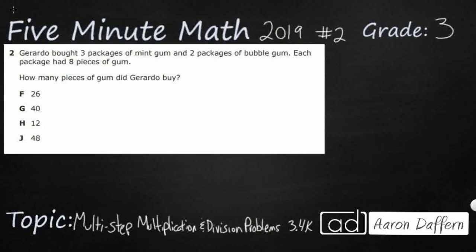Hello, and welcome to 5-Minute Math. Today we are looking at the third grade concept of multi-step multiplication and division problems. This is standard 3.4K in the great state of Texas, and we are looking at the second problem of the 2019 released star test. If you have not done so already, please go ahead and take a moment to pause the video, work this problem out on your own, and then unpause it and we will look at our answers together.